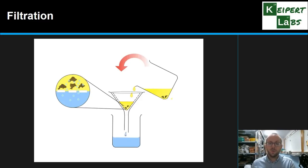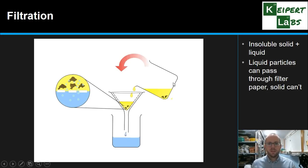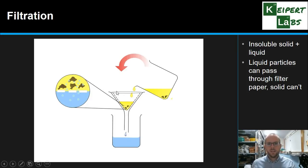If the solid doesn't settle, we need to use a technique called filtration. This can also work with solids that do settle out if we want them more effectively caught, but particularly if the solid isn't going to drop to the bottom, we need this. Again, it applies to an insoluble solid and a liquid — solids that dissolve in water can't be separated by this technique. We pour the mixture through a filter funnel with a layer of filter paper. The liquid, called the filtrate, drains through, but the solid — called the residue — gets blocked by the pores of the paper and is trapped. We can then take the filter paper, dry it, and recover those particles if needed.